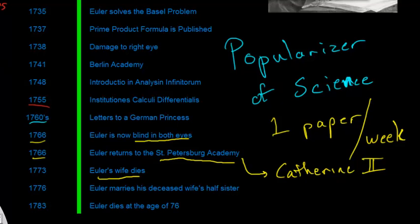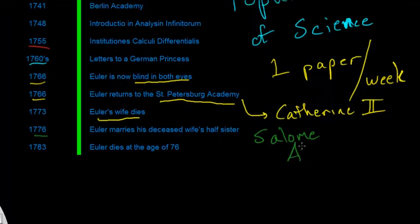his wife, Katharina, dies. And then in 76, he decides to marry his wife's half-sister. His deceased wife's half-sister. And her name is Salome Abigail Giselle.